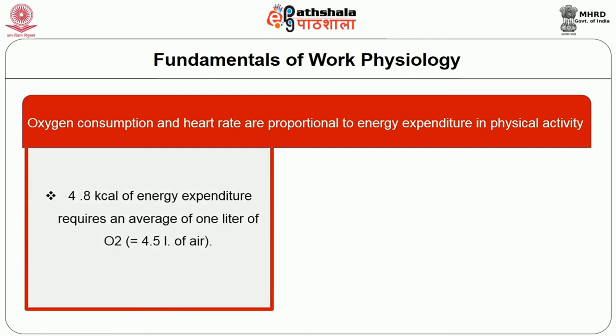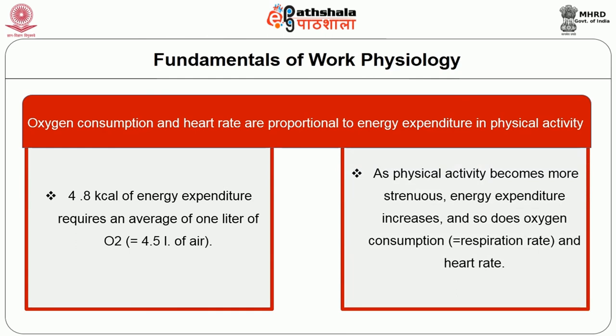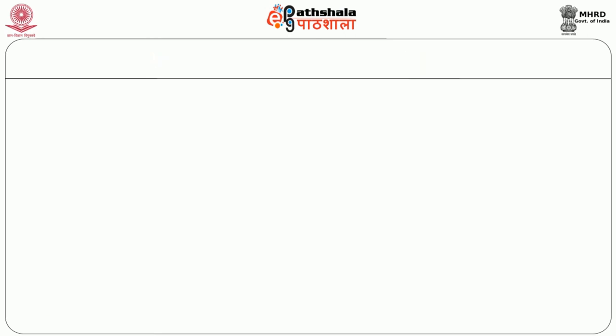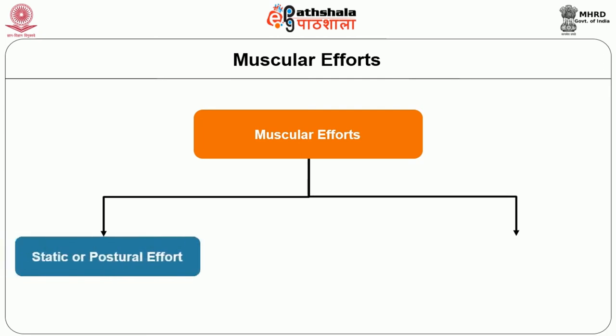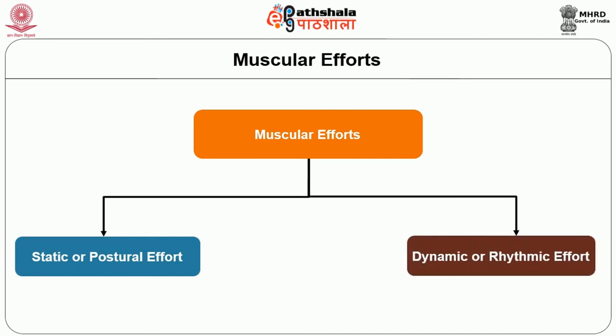Oxygen consumption and heart rate are proportional to energy expenditure in physical activity. 4.8 kilocalories of energy expenditure requires an average of 1 liter of oxygen, which is equal to 4.5 liters of air. As physical activity becomes more strenuous, energy expenditure increases and so does the oxygen consumption, respiration rate, and heart rate. Physical effort is carried out by your muscles and is often called muscular effort. There are two types: one is static or postural effort, and the second is dynamic or rhythmic effort.